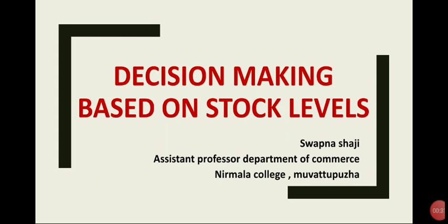What we are going to do is some problems relating to decision making. In Cost Accounting, we are going to take stock levels: Reorder Level, Minimum Level, Maximum Level, Danger Level, and EOQ.